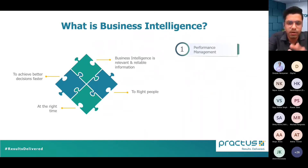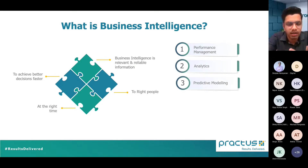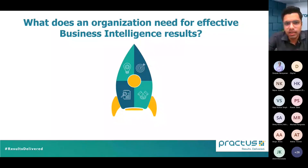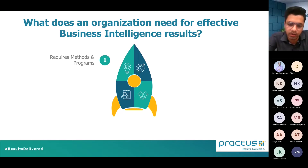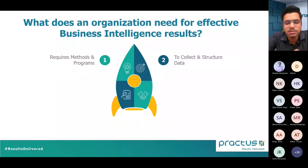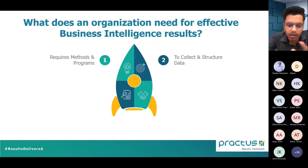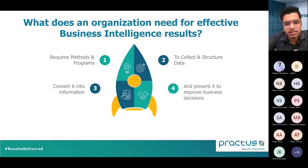Business intelligence may take the form of performance management, analytics, predictive modeling, data and text mining, and more. To have effective business intelligence results, you require methods and programs — be it connectors, database modelers, or IT tools — to collect and structure data. Your data might currently be scrambled and disparate, so you bring it all into a single place, make a data warehouse, and then do your analysis.